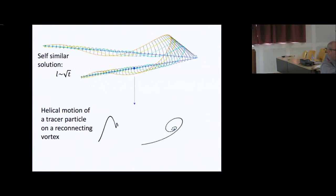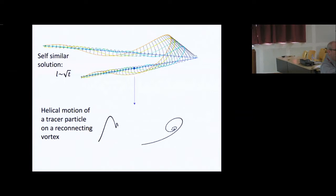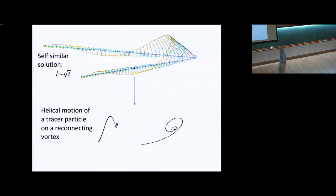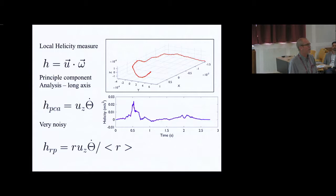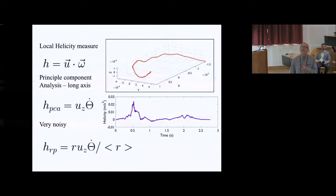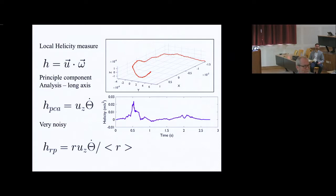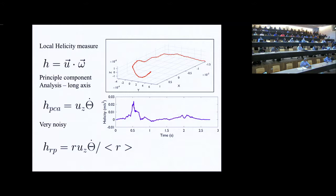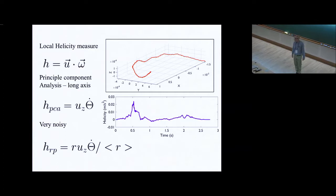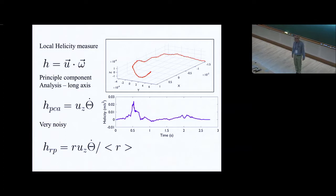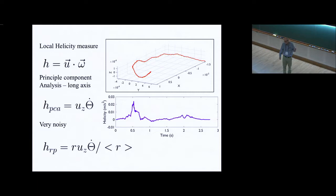We would expect to see particles executing helical motions. So we went looking for those. Here's where we needed a proxy for helicity that made sense. I want to just try to quantify helical motions of particles. It's not going to be U dot omega since I can't measure omega. The particles on the vortices are actually not rotating. I would posit that directly measuring anything like U dot omega in a quantum fluid is impossible.